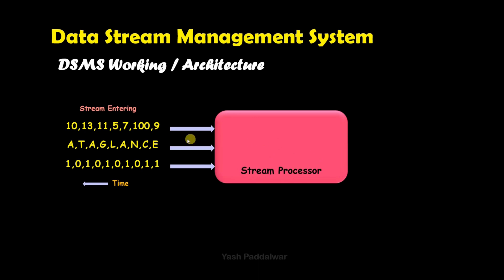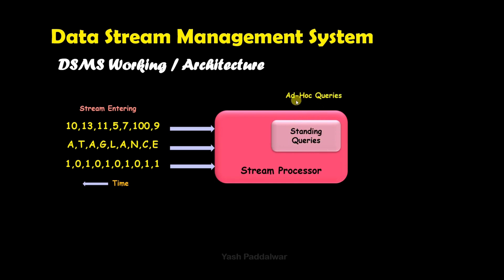The stream processor will process the incoming stream and generate some output. This output is generated based on queries. There are two types of queries: standing queries and ad hoc queries. We'll look into these two queries in detail first and then return to the working architecture.